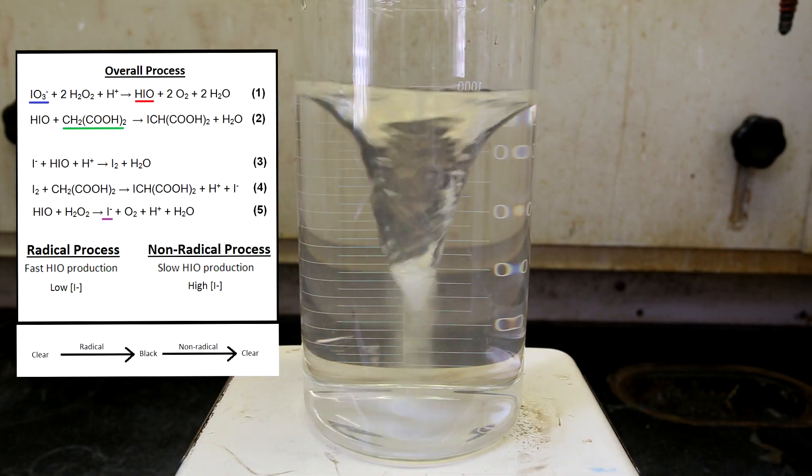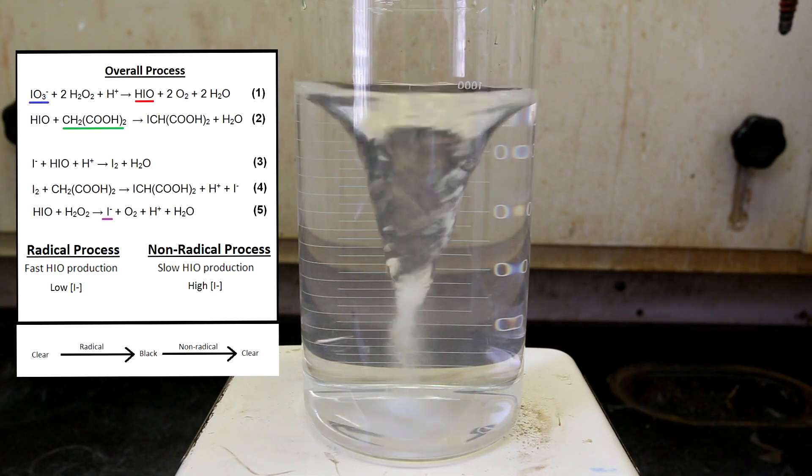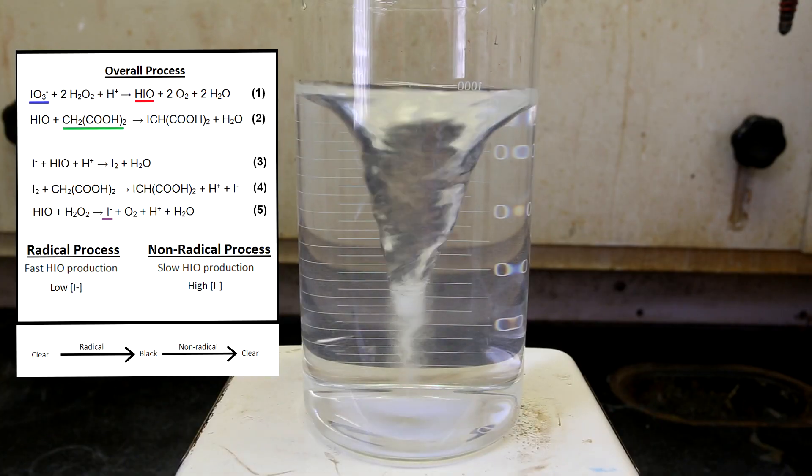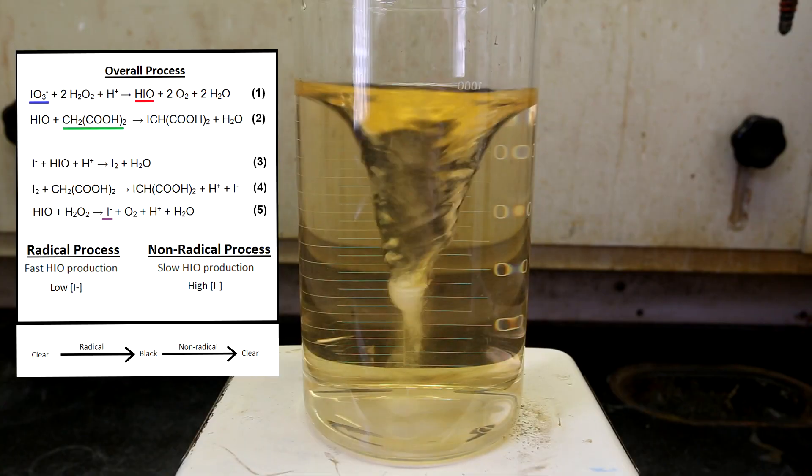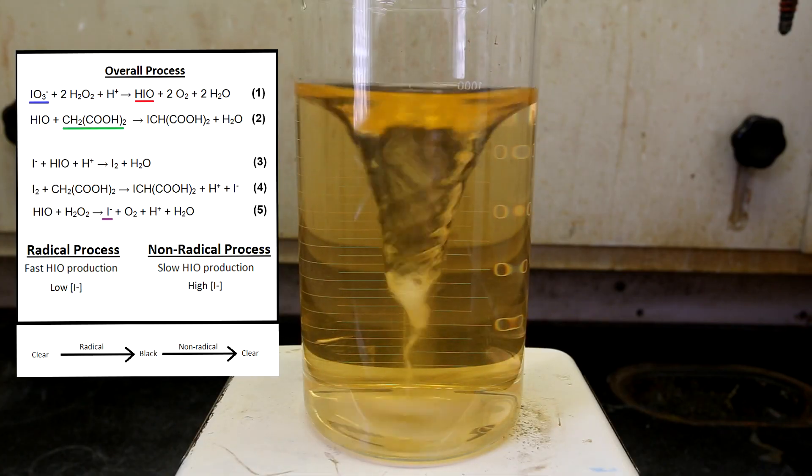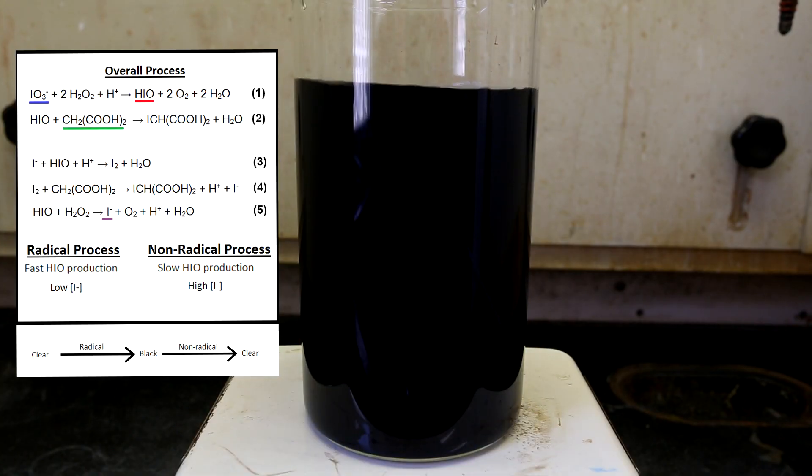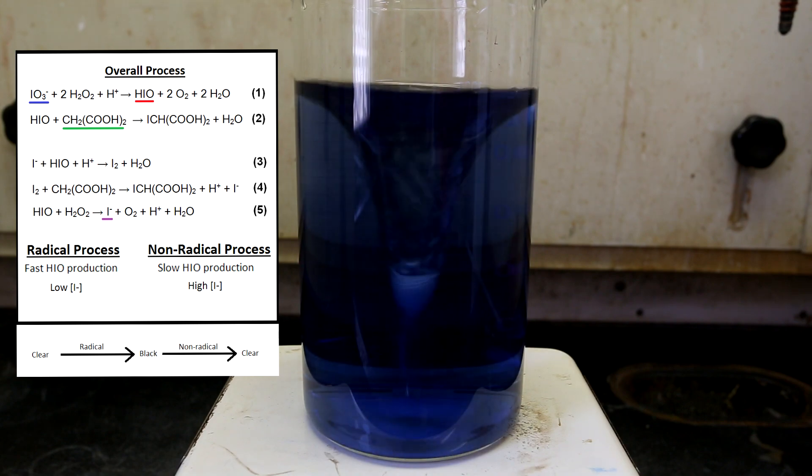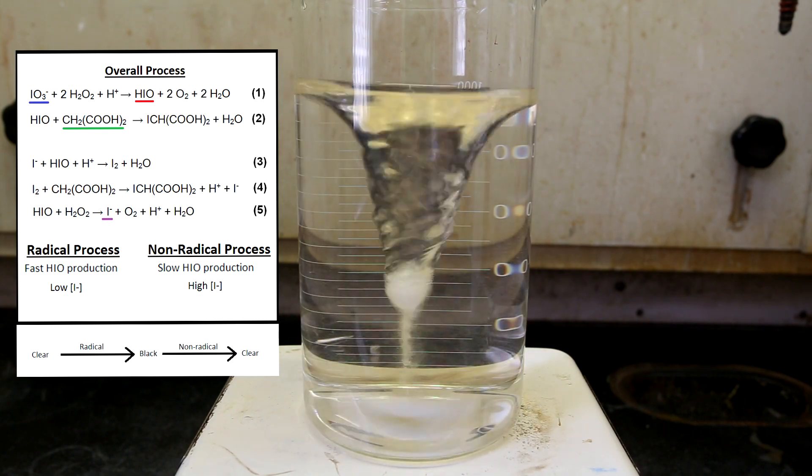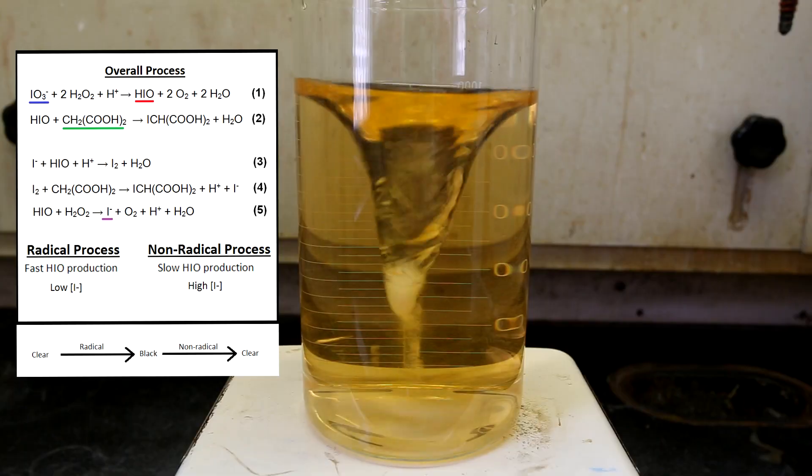Eventually, the solution will clear up and the concentration of iodide is extremely low. This marks the end of the non-radical process and at this point, the entire cycle will continue again. However, the duration of each cycle decreases as the reaction continues. Eventually, once the reaction is complete, it will remain a solid black. I hope that explanation makes sense, but honestly, it is quite complicated so do not be concerned if you are confused. If you would like to read more about this reaction, I'll provide a link below where I got all of my information about the mechanism of the reaction.